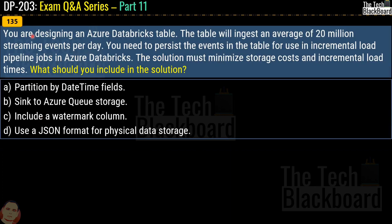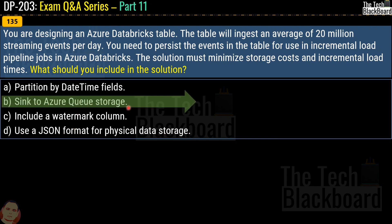Question 135: You are designing an Azure Databricks table that will ingest an average of 20 million streaming events per day. You need to process the events for use in incremental load pipeline jobs in Azure Databricks, and the solution must minimize storage costs and incremental load times. What should you include? Options are partition by datetime field, sync to Azure Queue Storage, include a watermark column, or use JSON format for physical data storage. The correct answer is option B, sync to Azure Queue Storage.